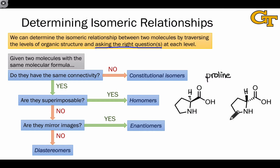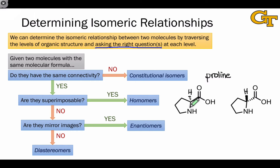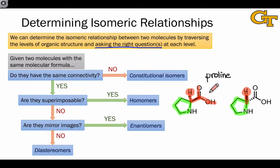Are they superimposable? There are a couple of different ways to determine this. One is to try to overlay them — the way these are drawn makes this fairly easy. If we slide the left-hand molecule over on top of the right-hand molecule, the five-membered rings match exactly with the nitrogen in the bottom right corner. However, the hydrogens don't correspond, since the hydrogen is going up in the molecule on the right and down in the molecule on the left, and the carboxylic acid groups also don't correspond. These two molecules are not superimposable because they differ in configuration at their stereocenter.